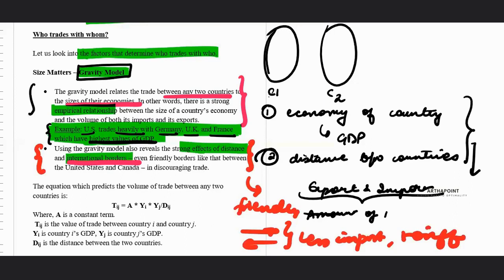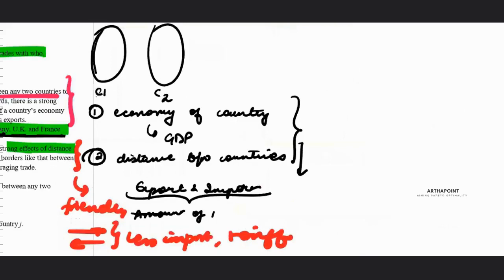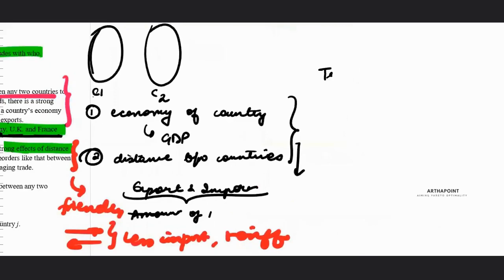So two things: US, from the empirical data, trades heavily with countries who have high GDP, which means that your trade is a function of the GDP of the countries, and it also is affected by how much is the distance between two countries and also how friendly are the borders of the two countries.